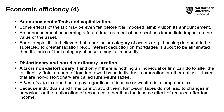Moving on to the definition of distortionary and non-distortionary taxation: a non-distortionary tax is one where nothing can be done to alter the tax liability. For example, if one is paying a lump sum tax — meaning you pay a specific amount whether you are earning something or earning absolutely nothing — you can do nothing about that. We would define this as a non-distortionary tax. Alternatively, we could call this a head tax: a tax one has to pay regardless of income or wealth. Even if you have nothing, you are still paying it, and you can do nothing about it.